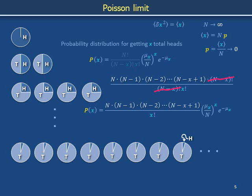Because N is becoming very large, the factors N, N minus 1, N minus 2, and so forth down to N minus x plus 1 in the numerator are each becoming close to N. Together, these are x copies of roughly N. We also have x copies of N in the denominator, so we cancel N to the x upstairs and downstairs to obtain P(x) equals μ_x to the x over x factorial times e to the minus μ_x. This is the Poisson distribution.